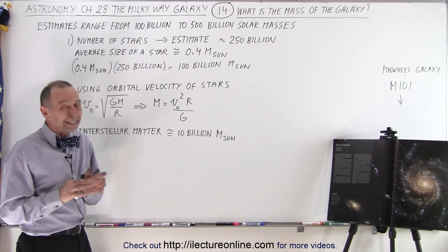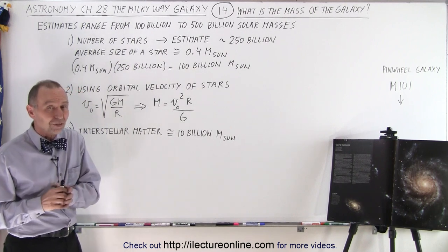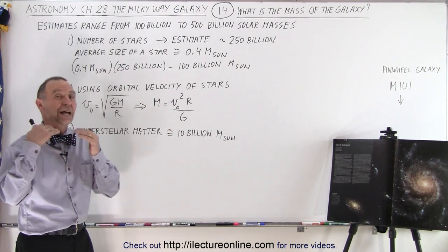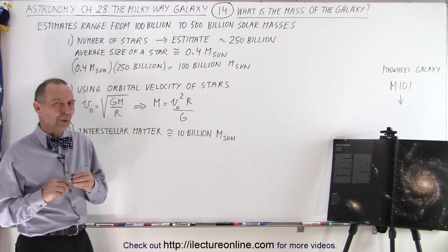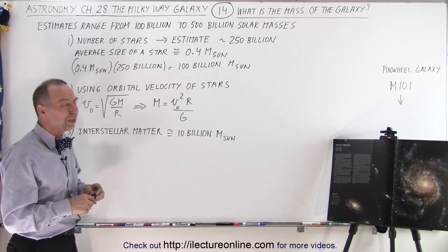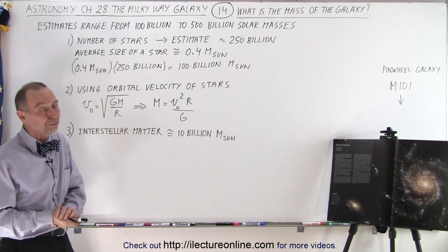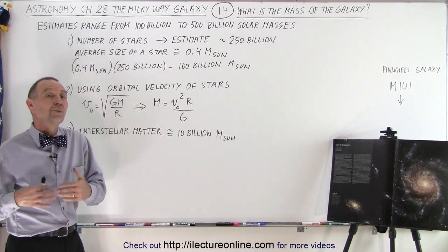Definitely you can say that it's probably at least 100 billion times the mass of the sun, perhaps more. Is it 500 billion? That's probably way on the high end. I don't think it's quite nearly that high. I think most estimates will be around 100, 150, 200 billion times the mass of the sun. So that's probably a reasonable answer.